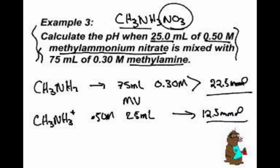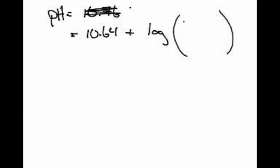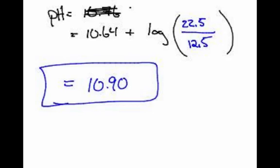So let's go back and figure out who is the base and who is the acid. The base is the methylamine and his conjugate acid is the methyl ammonium. So it'll be 22.5 over 12.5. And that's it, folks. 10.64 plus this log, and you're done. We get 10.90. So that's the pH of this solution.